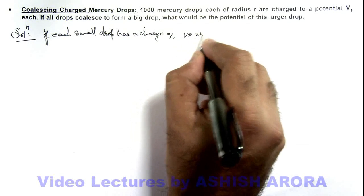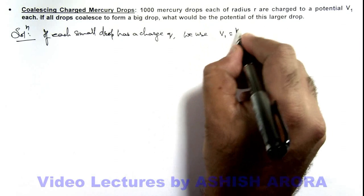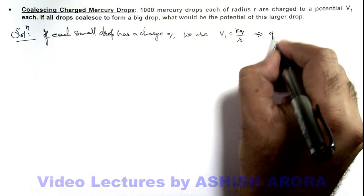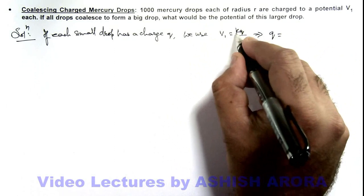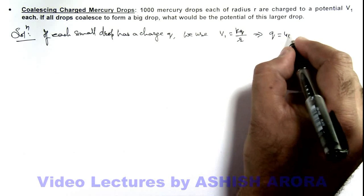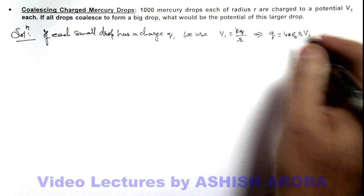The potential of each drop can be given as kq by r. This will give us the value of charge on each drop. We can replace k by 1 over 4πε₀, so this is q = 4πε₀rV₁.